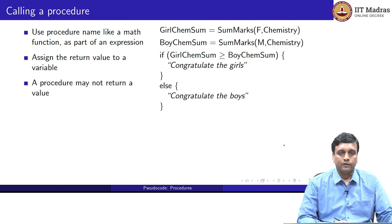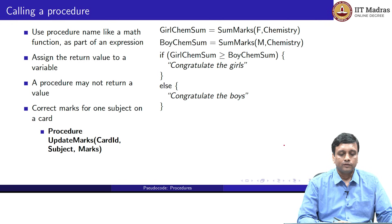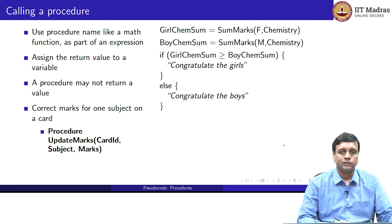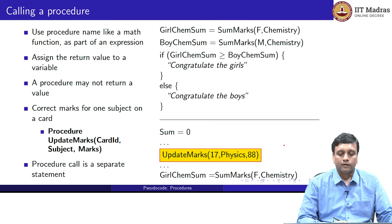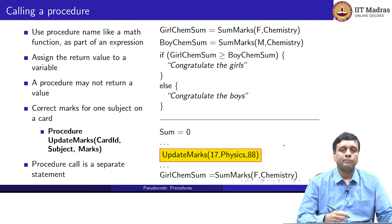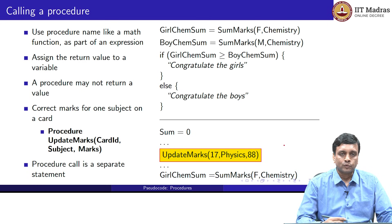It is not required that a procedure return a value. Sometimes the procedure may be doing some update to a value or organizing information without really computing something to return. A typical example would be a procedure which corrects a card — it takes a card and updates the marks for a given subject, taking three arguments: the card ID, the subject to be updated, and the new marks to be assigned. The effect of this procedure is to actually change the card value. We would write this as a statement without assigning the return value to anything, because the return value is not useful to us. These are two different ways to call a procedure: if the return value is useful, call it as part of an expression and assign it to a variable; if it is not important, just call it as a statement with the appropriate arguments.